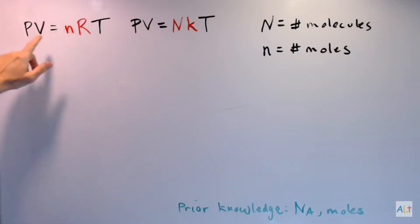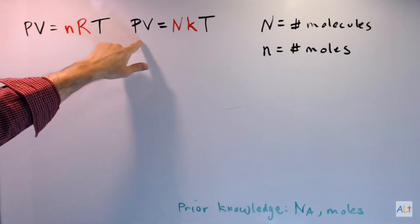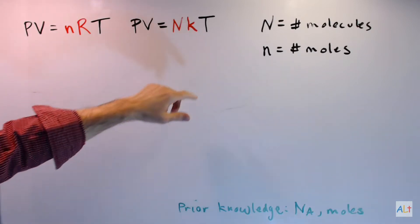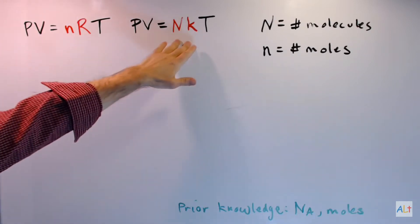Now remember that the P, the V, and the T are identically the same in both of these. Which means that Nr equals Nk.